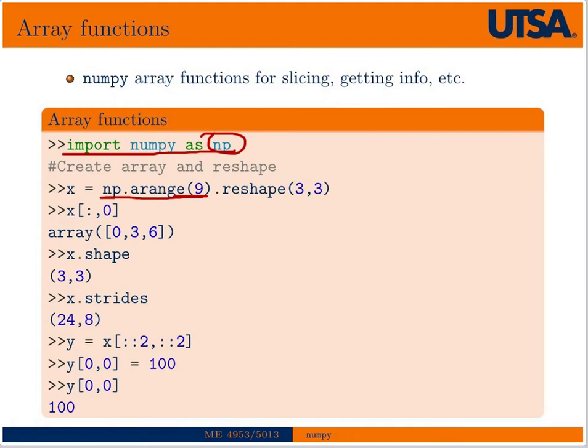And then we're going to reshape that into basically a 3 by 3 matrix, if you will. So then it will have in one row 0, 1, 2, then in the next row 3, 4, 5, and then in the next row 6, 7, 8.